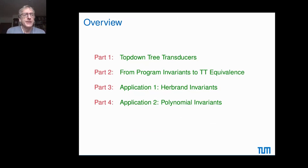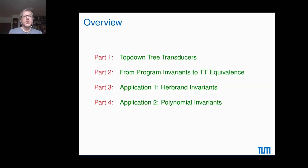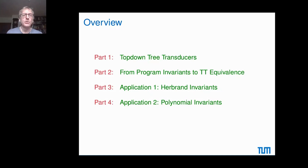Let me give an overview of what will be covered. I gave an overview of what is known about equivalence. Then I will explain in more detail the formalism of top-down tree transducers. In the second part, I will show you why that matters when you want to prove invariance - equivalence for tree transducers but invariance for imperative programs. I will consider two kinds of invariance: what people call Herbrand invariance and polynomial invariance, and show what is known and how these relate to the corresponding tree transducer equivalence problems.